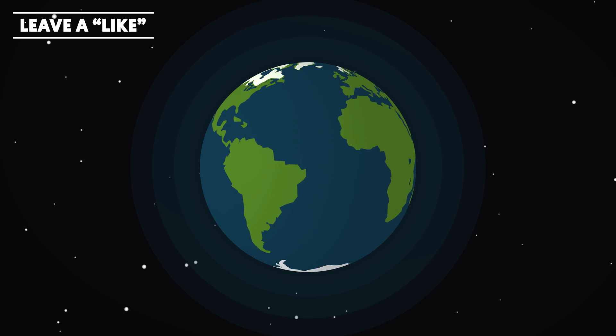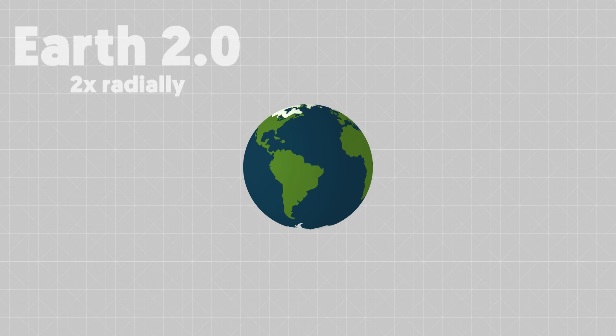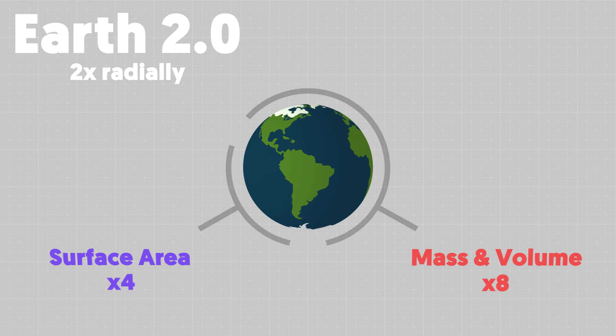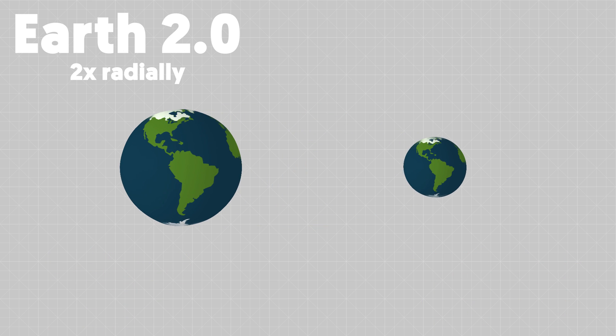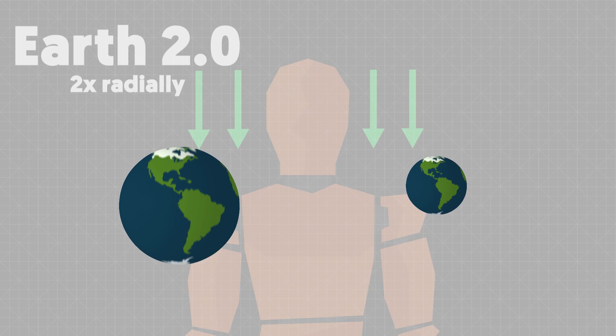For example, if the Earth were to double in width, the surface area would be four times greater and the mass would be eight times greater, increasing the gravitational acceleration and the weight of everything by two.